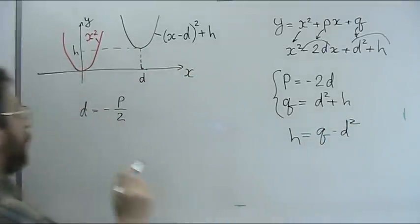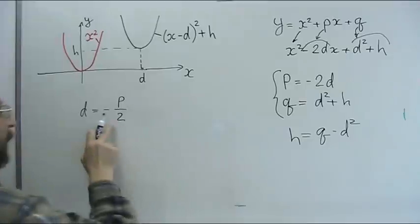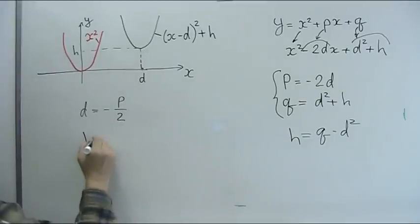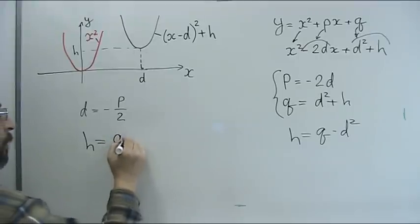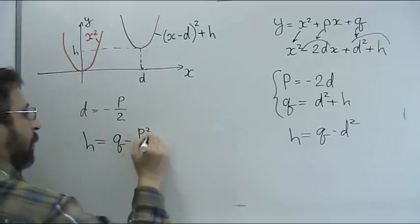And if we substitute value for d we get h = q - p²/4.